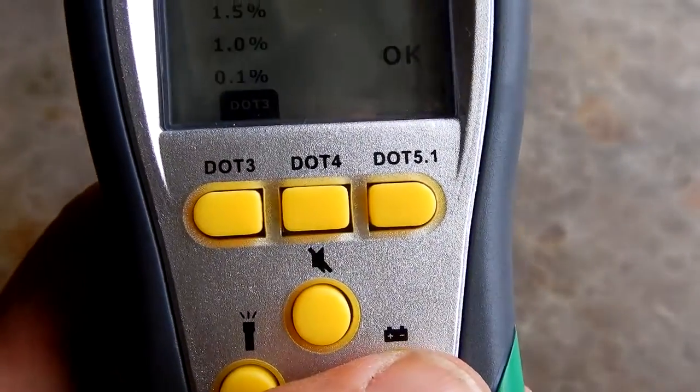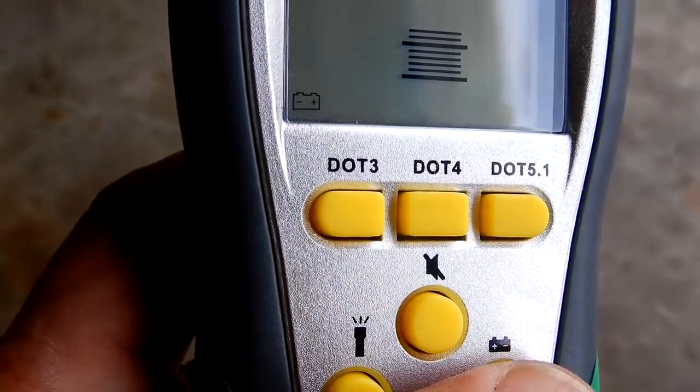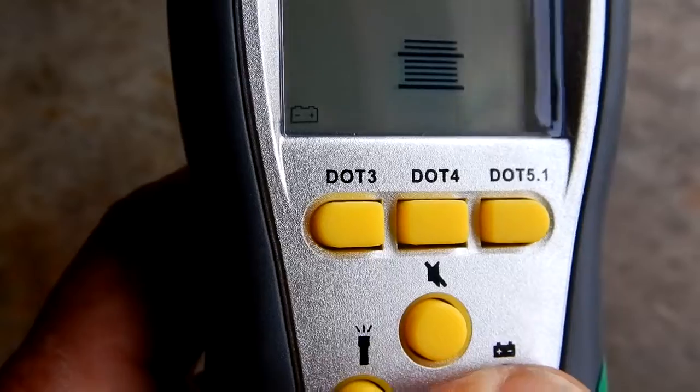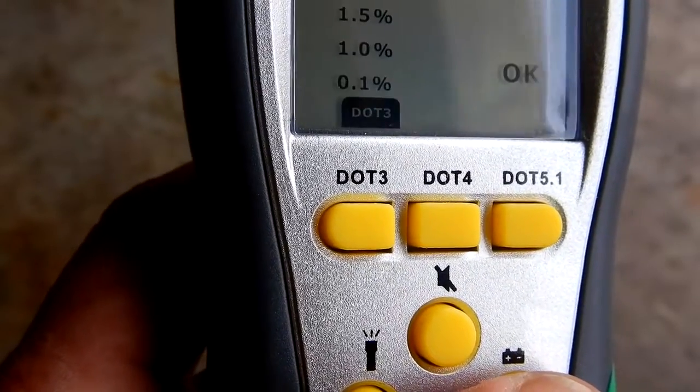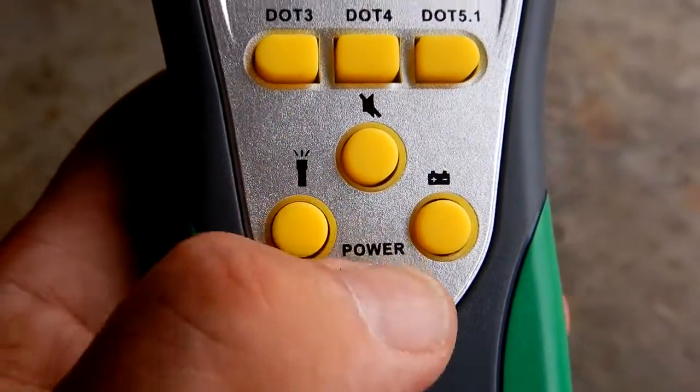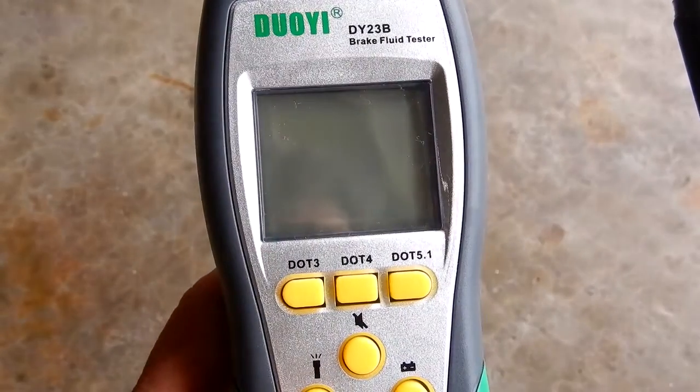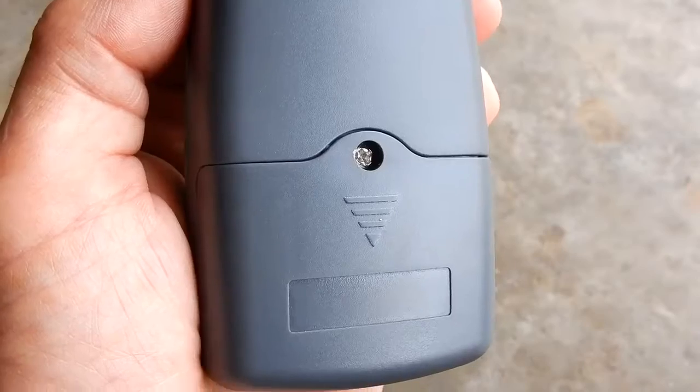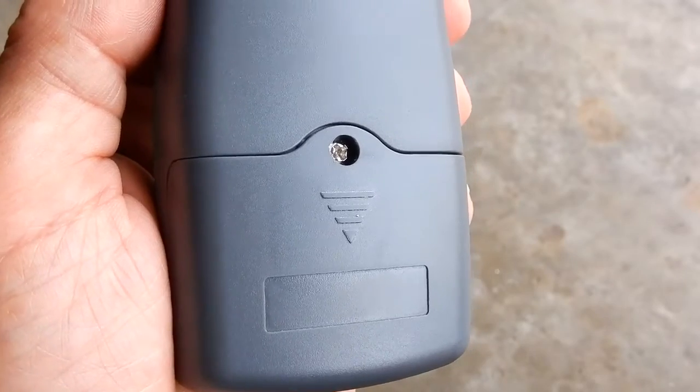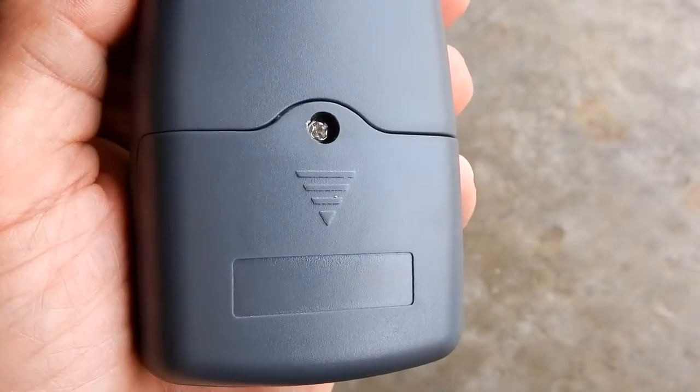Then we have a battery check. It'll let you know if your battery is good when it's low, and of course your power switch. Now this does require a 9-volt battery. It does not come with one, so you have to supply your own 9-volt battery.